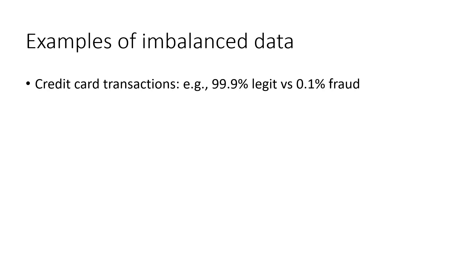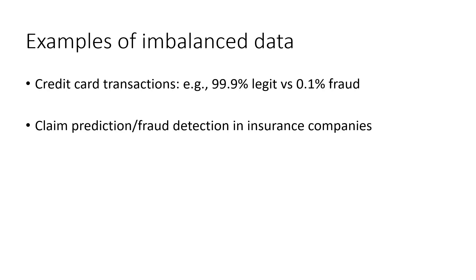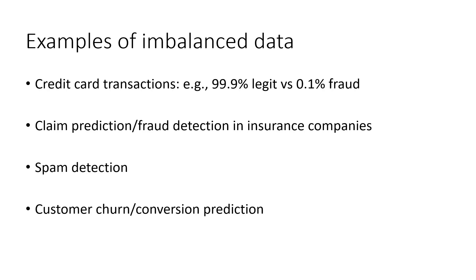This is a highly imbalanced dataset. In this case, we can call the legit transactions the majority class, while the fraud transactions the minority class. Besides credit card fraud detection, other examples of imbalanced data include claim prediction or claim fraud detection in insurance companies, spam detection, customer churn or conversion prediction, and so on. So you can find the imbalanced problem in different fields.